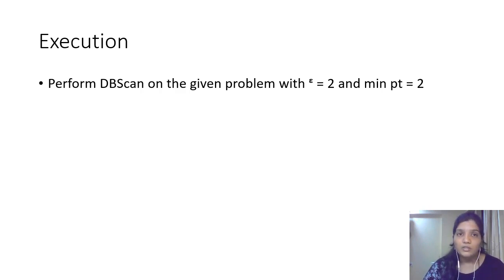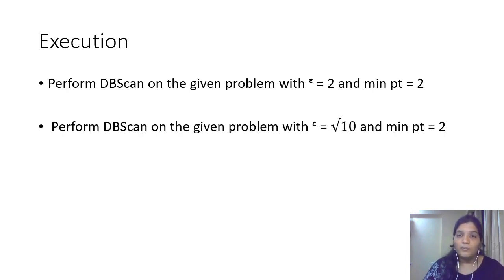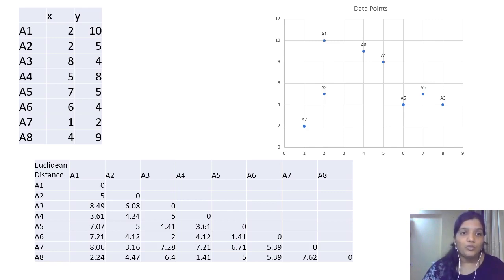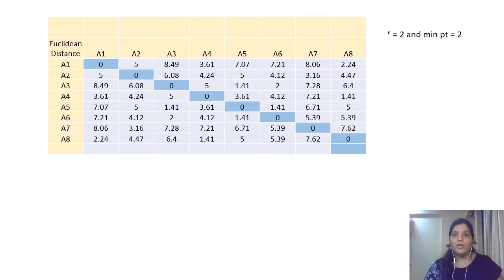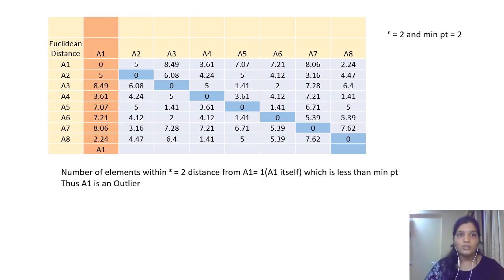Now let's see how to perform this on a numerical problem — the one solved in class. We consider epsilon distance as 2 and minimum points as 2. You can also try the same problem with epsilon as root 2 and minimum points as 2 to see the difference. These are the data points and we calculate the Euclidean distance between them. Given data: epsilon radius is 2, minimum number of points is 2.